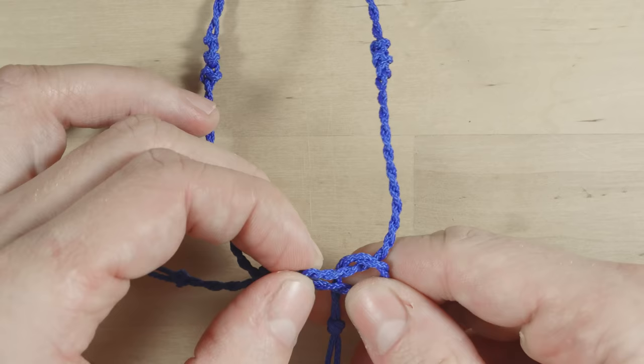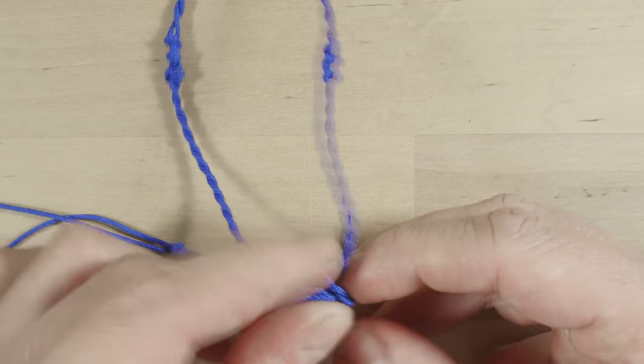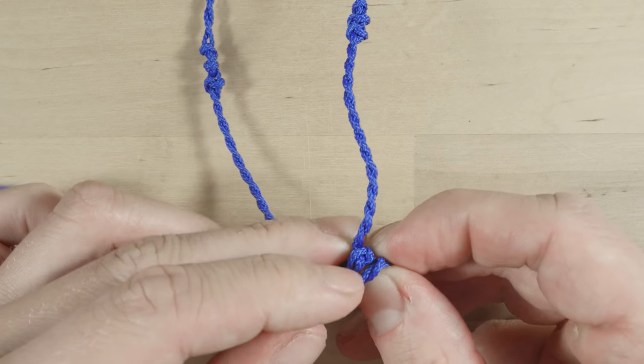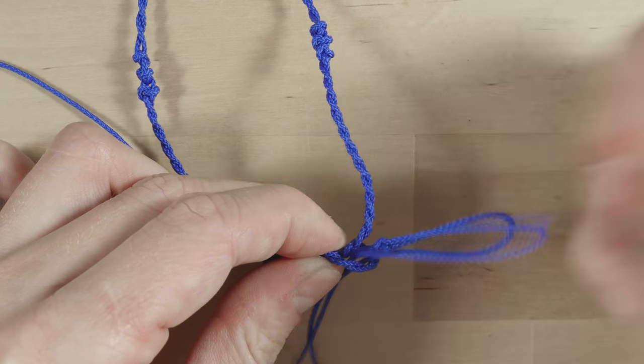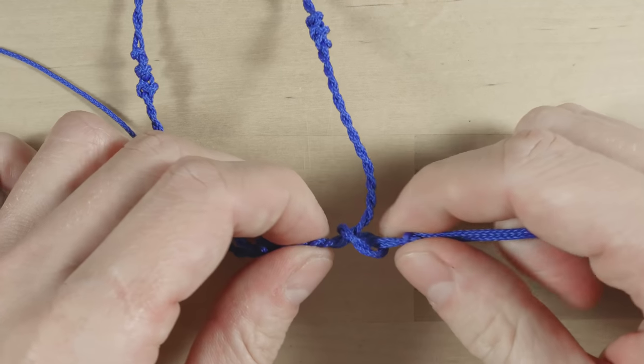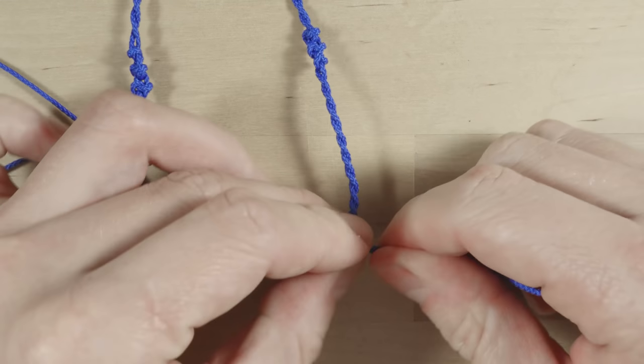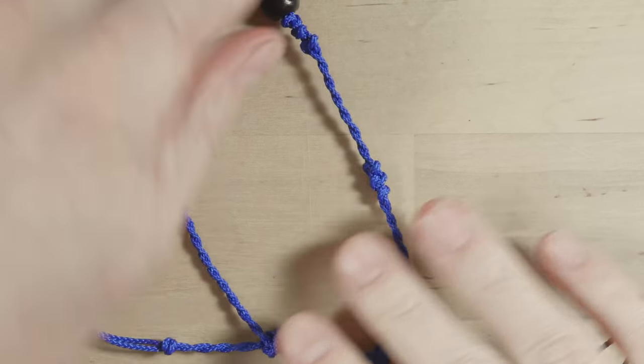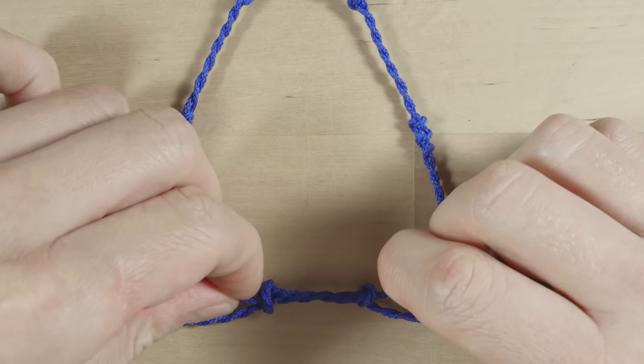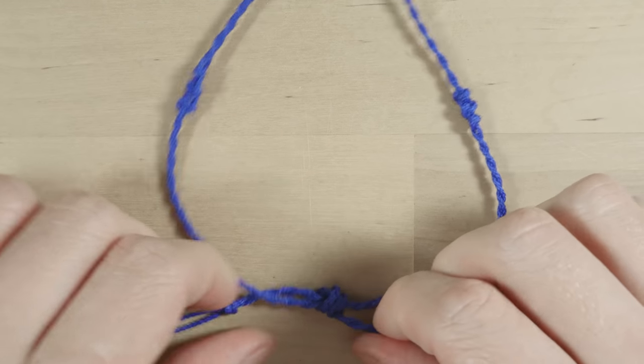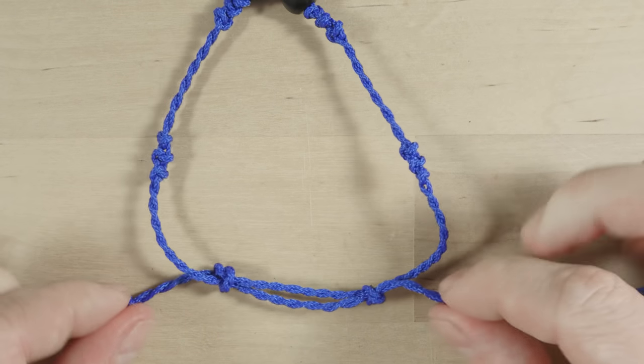Feed your end through the loop, and tighten up. This makes your pull paddies adjustable. So you can make them bigger, or you can close them by pulling on the two ends.